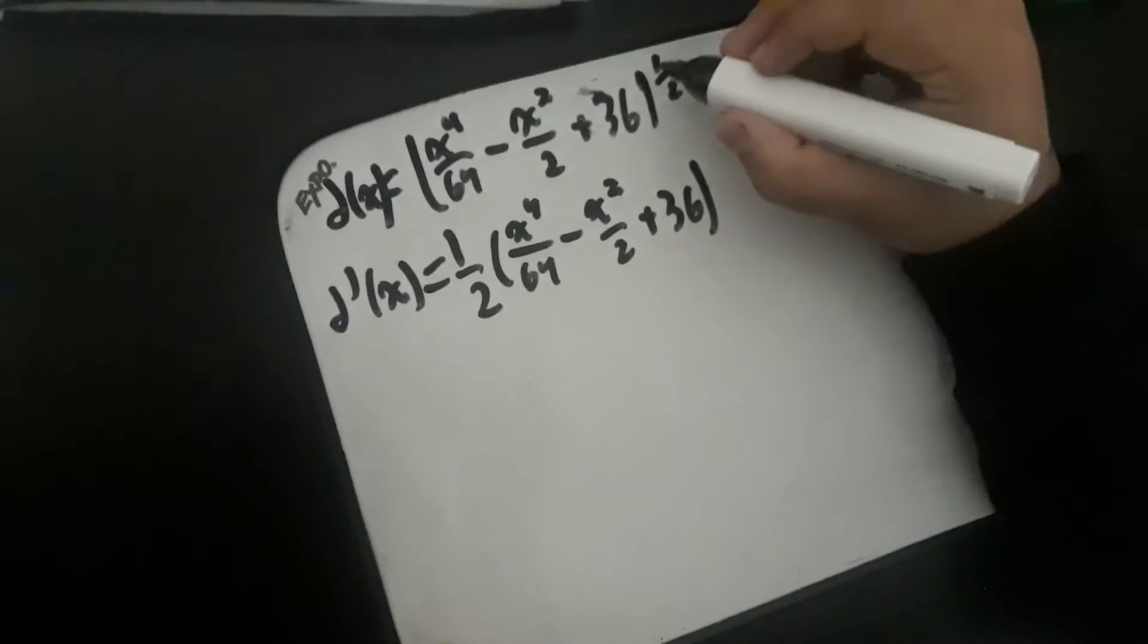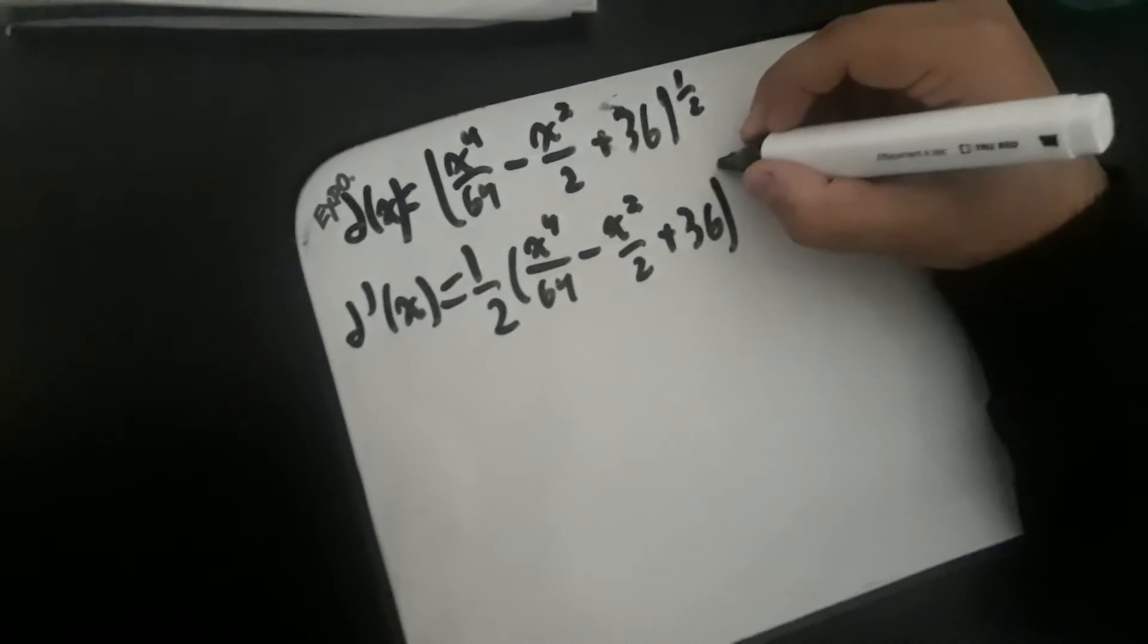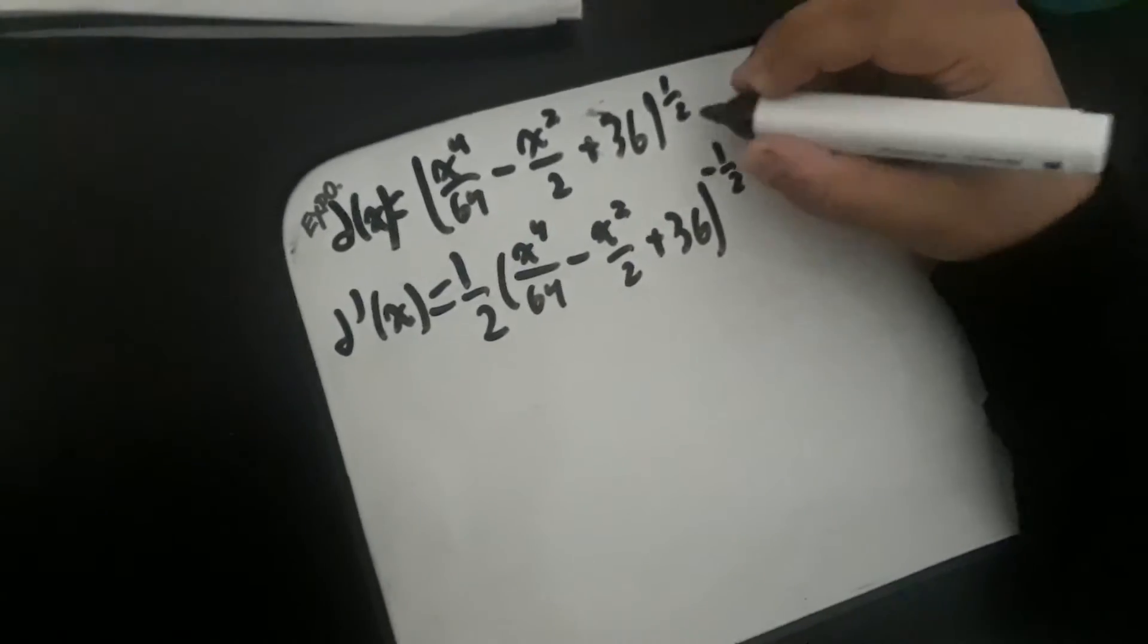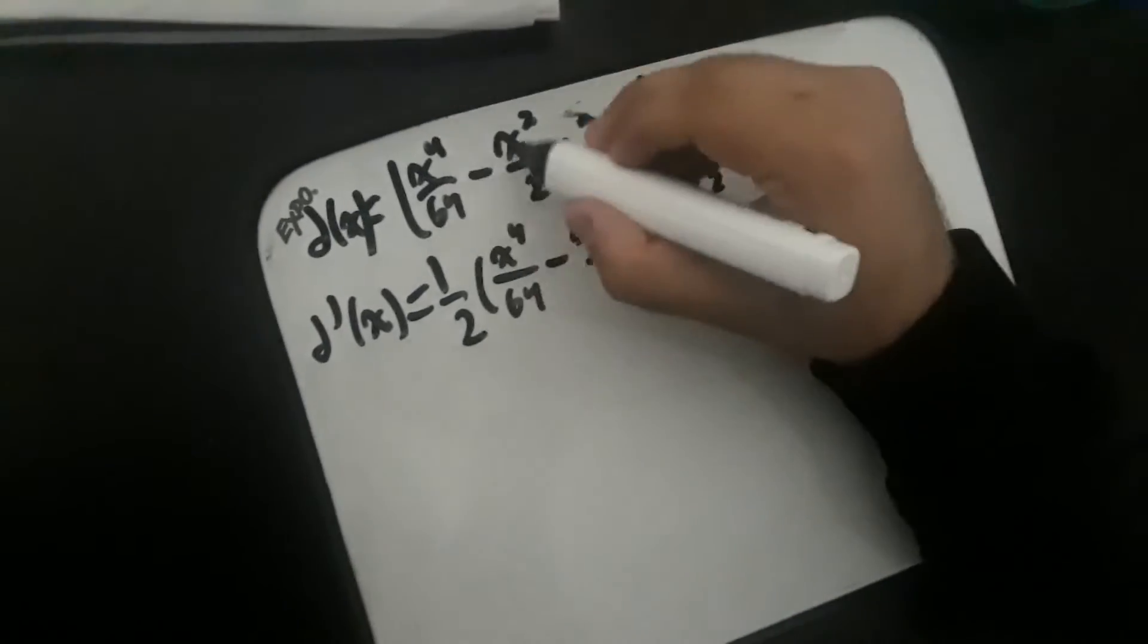And then we subtract 1 from this half which gives us negative 1 over 2, and we take the derivative of the inside function.